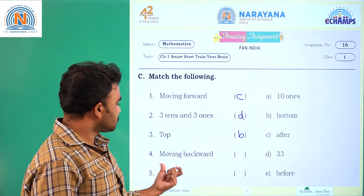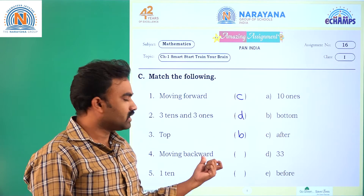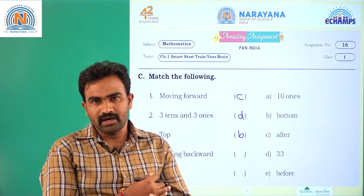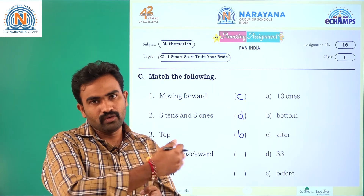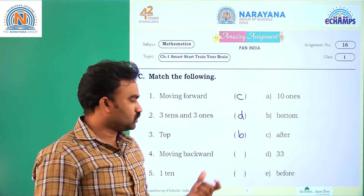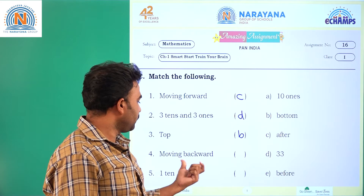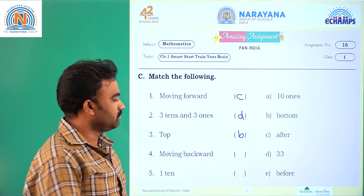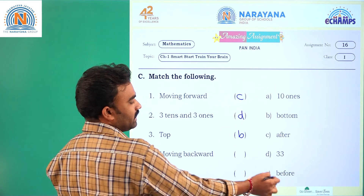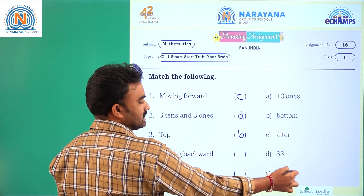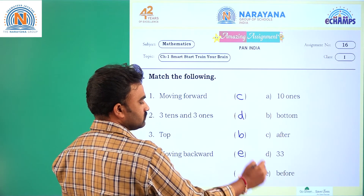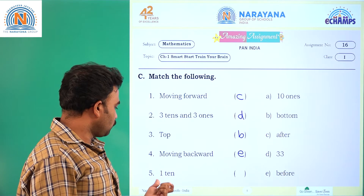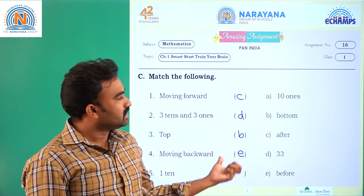Next: moving backward. To find the before number, we move backward. So moving backward means finding the before number. Where is it? It is at option E, so E is the answer.